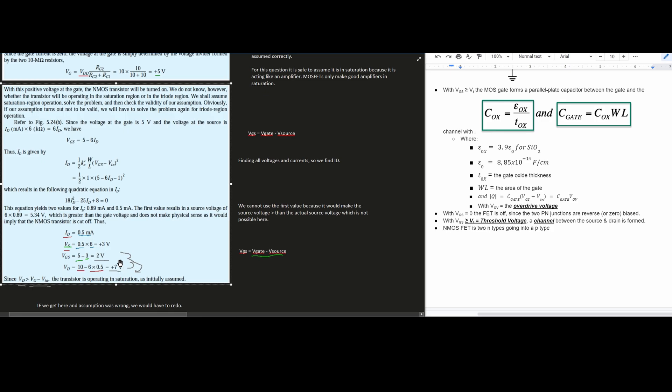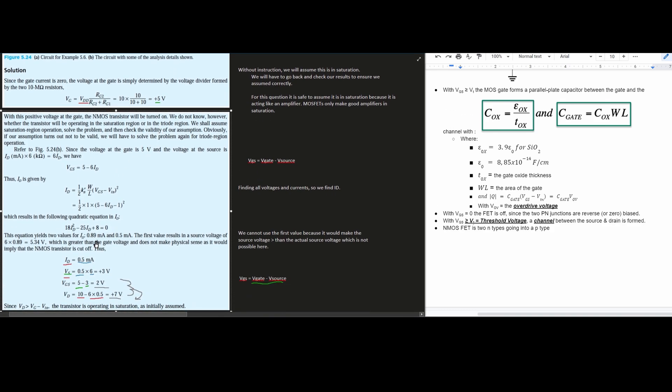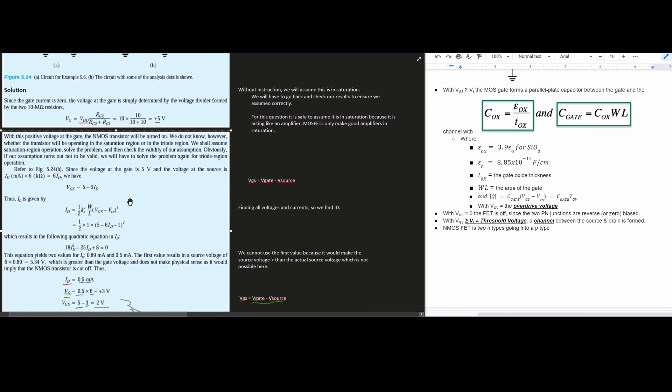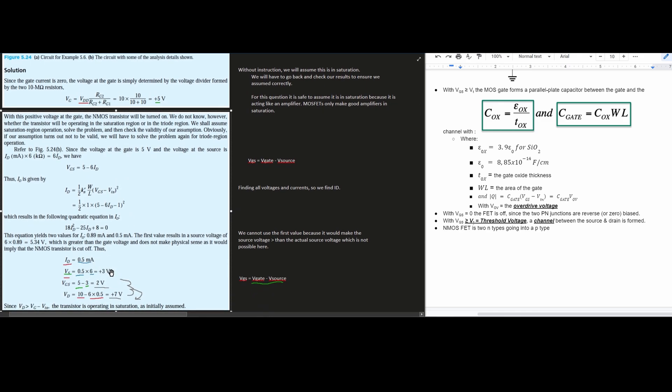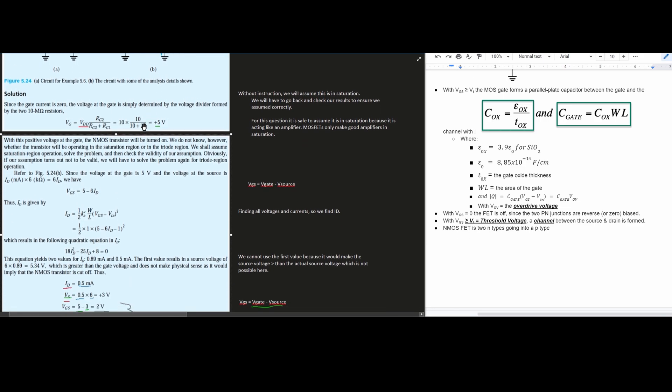We're going to be looking at our V source. So our V source is going to be the source voltage going into our gate. So we have the current ID times the resistor. Our current is 0.5 milliamps times the 6. That's going to give us 3 volts, and it's a 6 kilo ohms. So that's going to manipulate it to be 3 volts. Now our VGS is going to be equal to the V gate minus our V source. And so our V gate we found to be 5 volts. Our source voltage right here, we just found to be 3 volts.